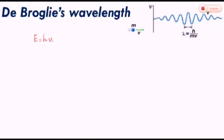For the wave behavior of subatomic particles like electrons, we always use de Broglie's wavelength where lambda is equal to h over mv.